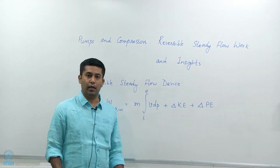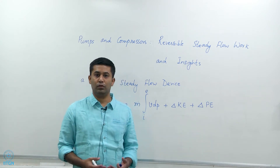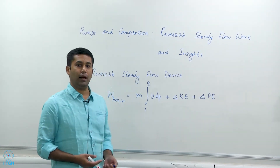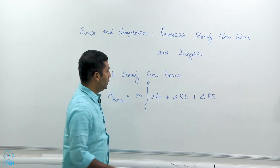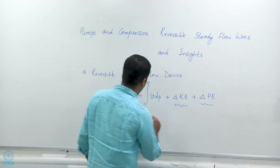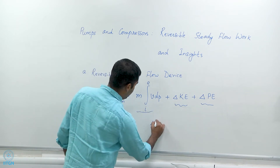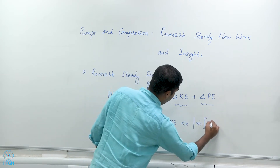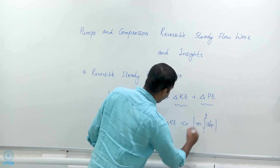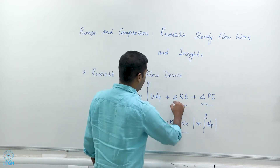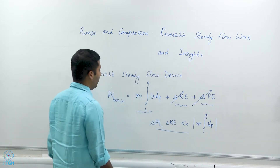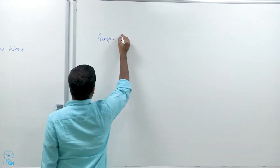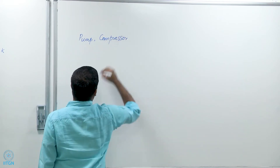For most pumps that are pumping liquids like water, fuels like diesel, petrol, or any other chemical fluids, most of the time the changes in kinetic and potential energies are very minimal and so these are small compared to the M-dot integral V dP term. In other words, delta PE and delta KE are each very small compared to the magnitude of M-dot V dP.